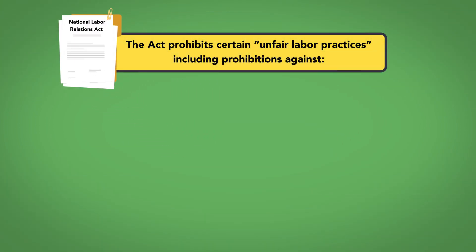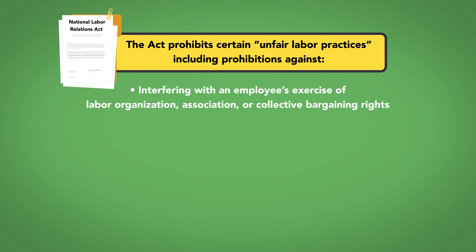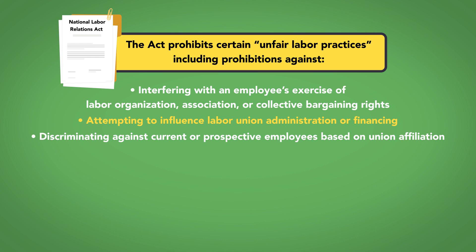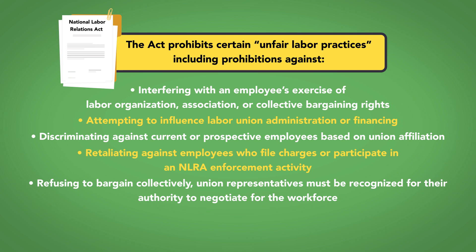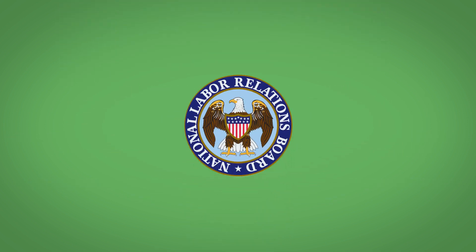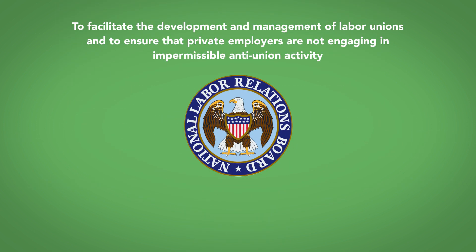The act prohibits certain unfair labor practices, including prohibitions against interfering with an employee's exercise of labor organization, association, or collective bargaining rights; attempting to influence labor union administration or financing; discriminating against current or prospective employees based on union affiliation; retaliating against employees who file charges or participate in an NLRA enforcement activity; and refusing to bargain collectively. Union representatives must be recognized for their authority to negotiate for the workforce. The act created the National Labor Relations Board to facilitate the development and management of labor unions and to ensure that private employers are not engaging in impermissible anti-union activity.